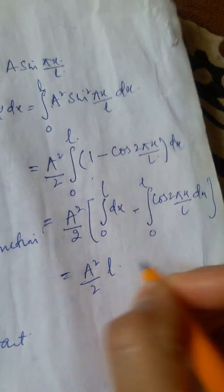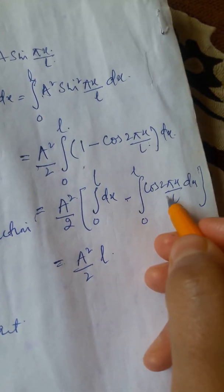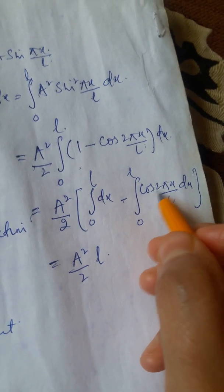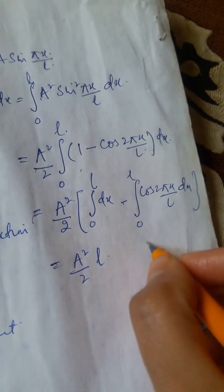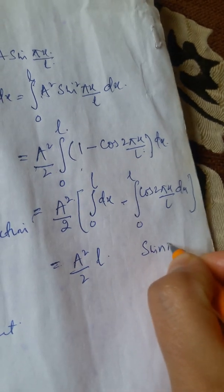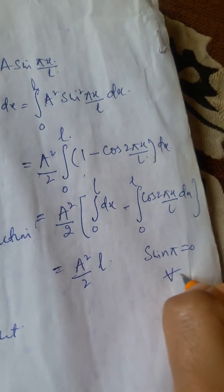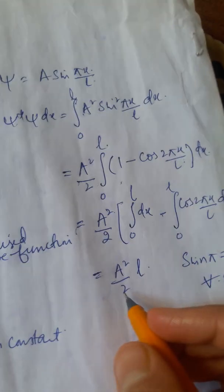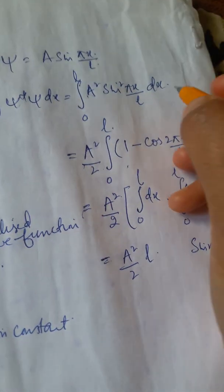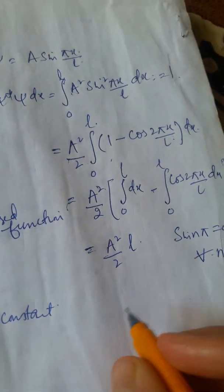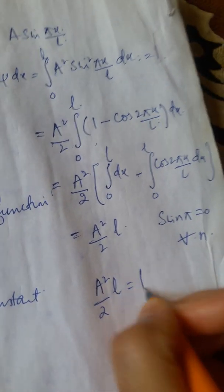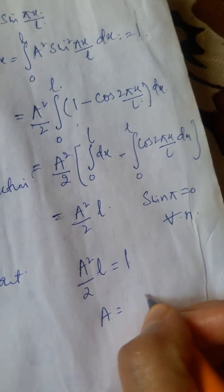This is equal to A²/2. Here an L will come out and we know that this integral is equal to 0 because integration of cos(2π) equals sin(2π) and sin(nπ) is 0 for all values of n. So, we are left with this factor only and we know that this total probability was equal to 1. So, A²/2L = 1, and that way A = √(2/L).